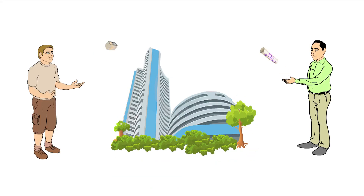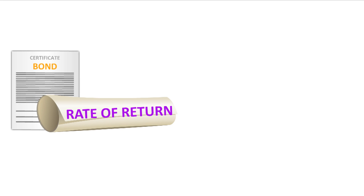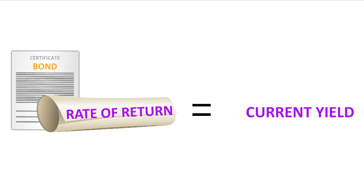Since bonds are bought and sold in the secondary market, the market price of Mudra's bond is likely to fluctuate and be different from its face value. In such a scenario, the rate of return on Mudra's bond would be different from the coupon rate. This rate of return is known as the current yield.